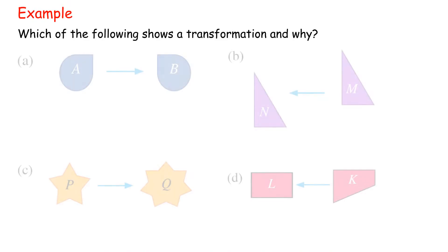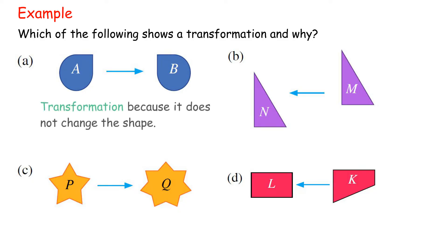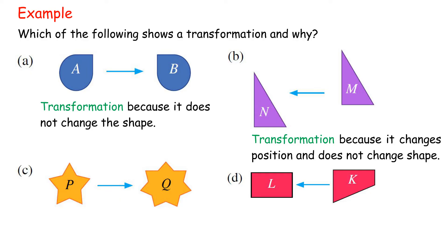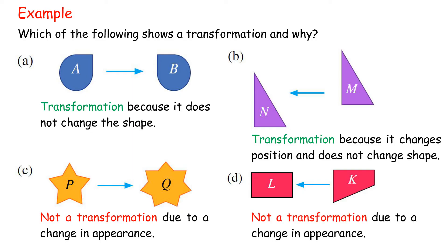Which of the following shows a transformation and why? Solution: A. Transformation, because it does not change the shape. B. Transformation, because it changes position and does not change shape. C. Not a transformation, due to a change in appearance. D. Not a transformation, due to a change in appearance.